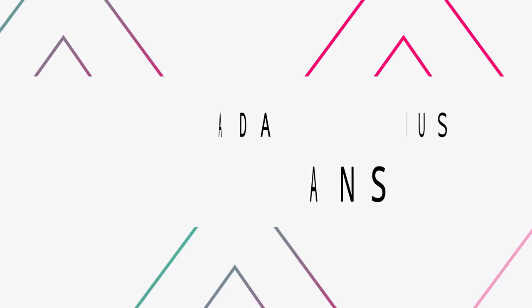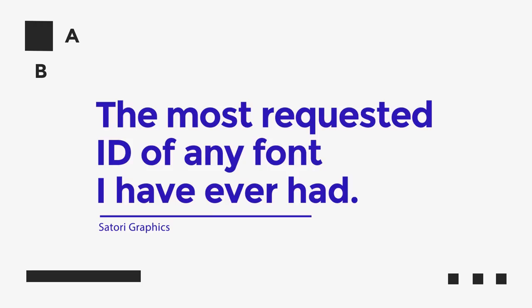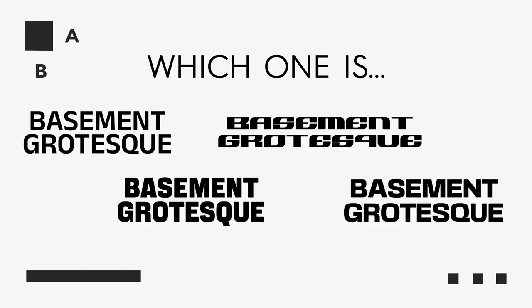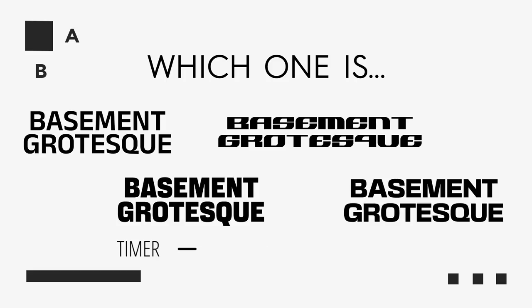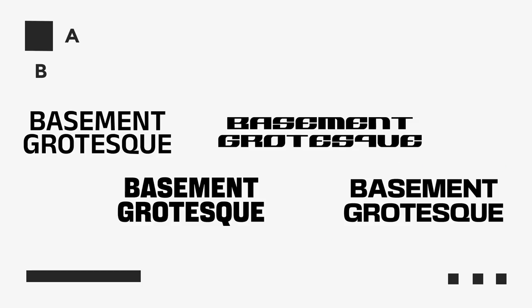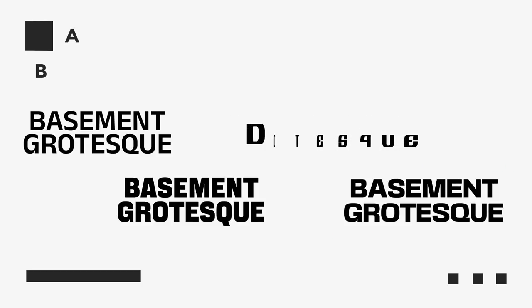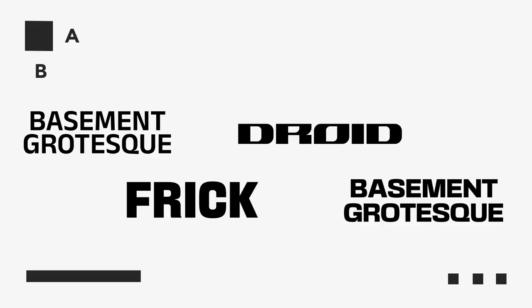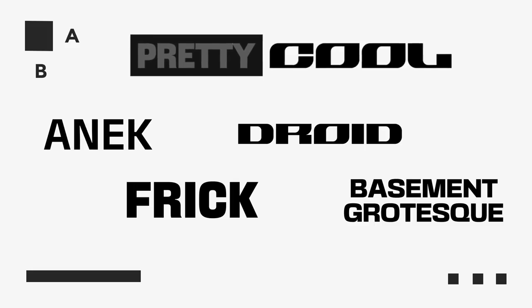One of these fonts is probably the most requested font ID on this channel — Basement Grotesque. I get daily questions asking what this font is, and it's amazing that Basement Grotesque is actually free. Basement Grotesque is the font on the far right. Next to it on the left is Droid, then a font called Frick, and on the far left is Anek. These are all pretty cool-looking typefaces.